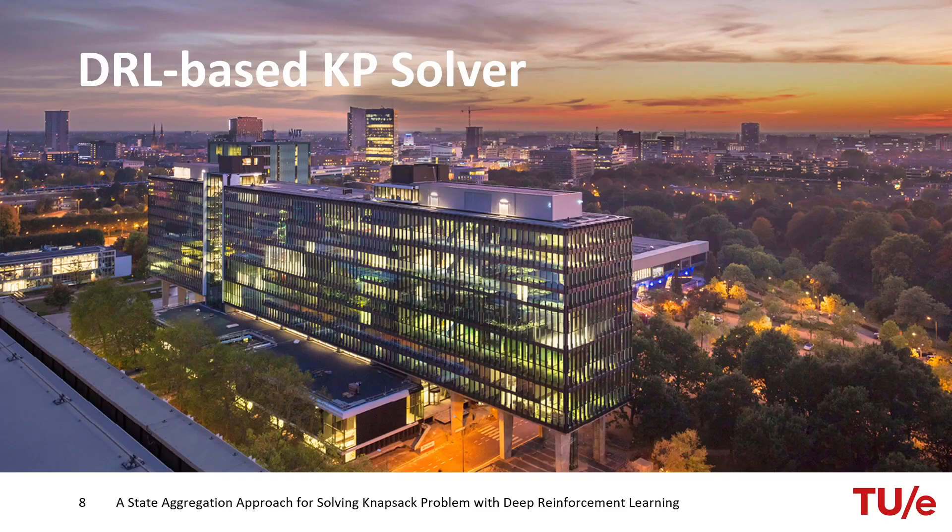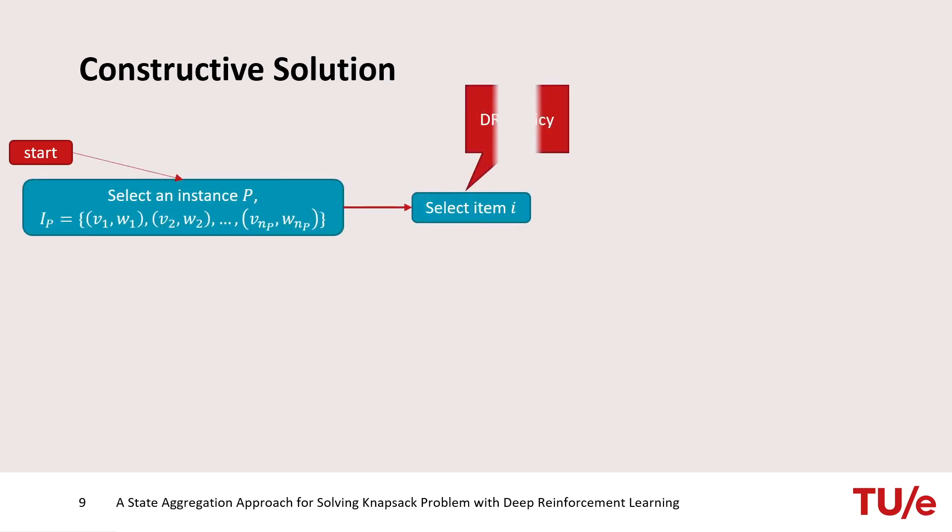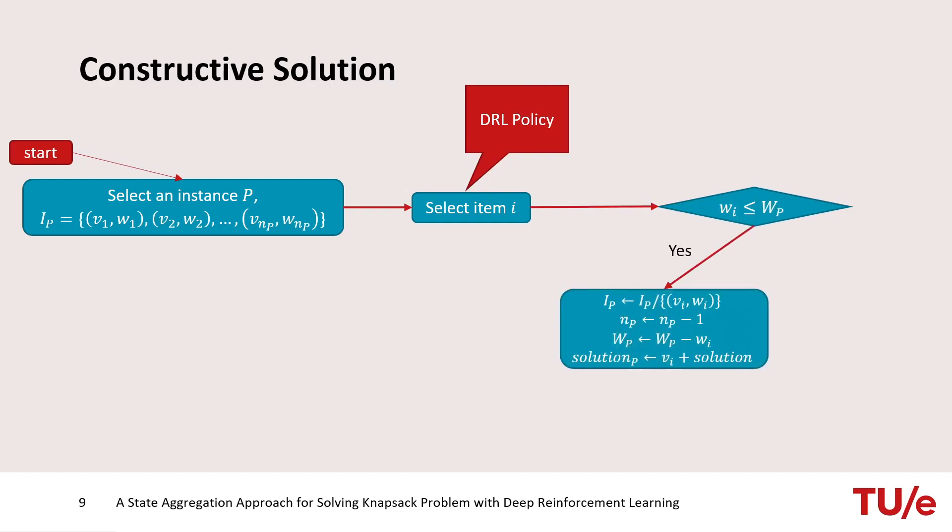First, the deep reinforcement learning based Knapsack Problem Solver. The solution obtained from our method is a constructive solution. Here an instance is chosen to be solved and then an item is selected according to the deep reinforcement learning policy. After selecting the item, its weight is compared with the capacity. If the item can be added to the knapsack, the capacity, the number of items and the solution value are updated and the item is removed from the problem. Otherwise, only the item is removed without updating solution and capacity.